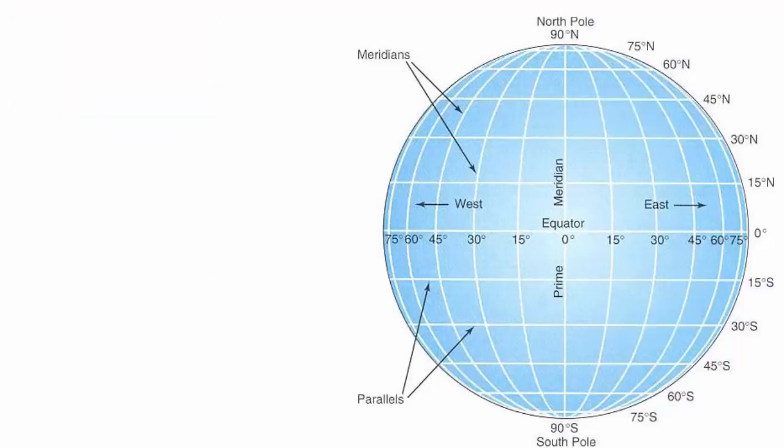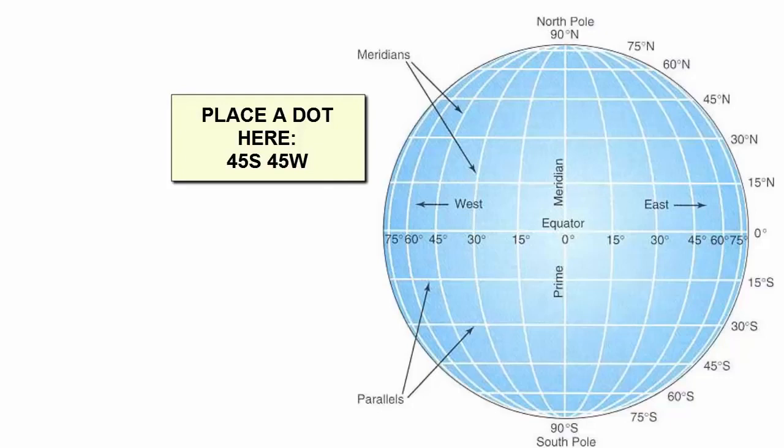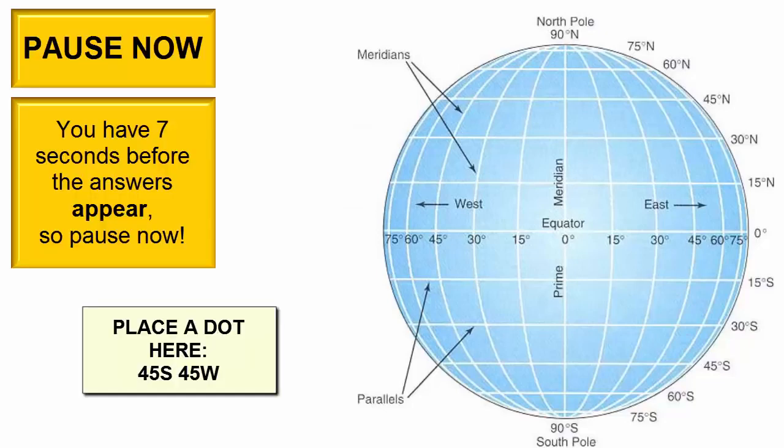Now, try to accurately locate or place a dot on the spot that is located 45 degrees south of the equator and 45 degrees west of the prime meridian.